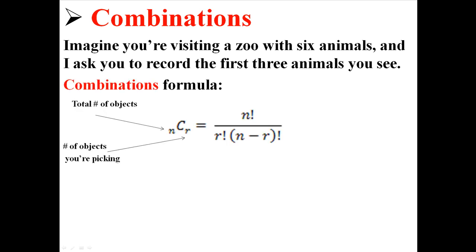So, what we have is the combinations format, which is pretty similar to the permutations format, it's just a little bit different. Still, N stands for the total number of objects you have, and R stands for the total number of objects you're picking. So in this case, we have six different objects, which are six different animals, and we're picking three different animals. So N is six, and R is three.